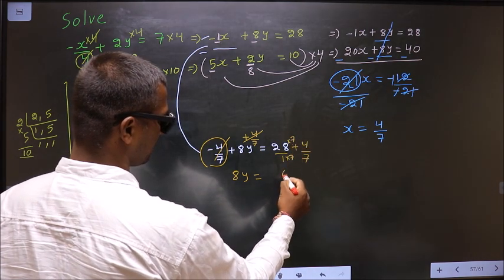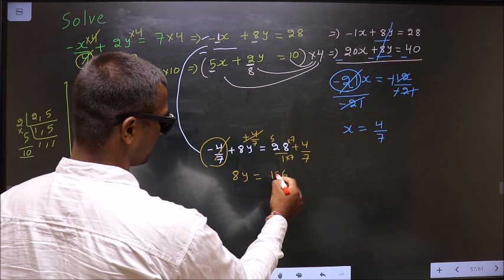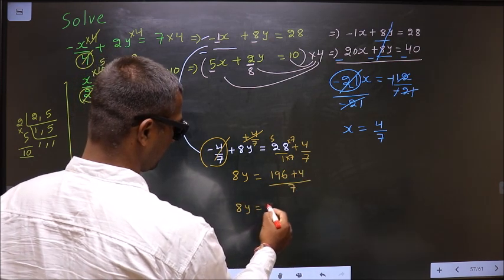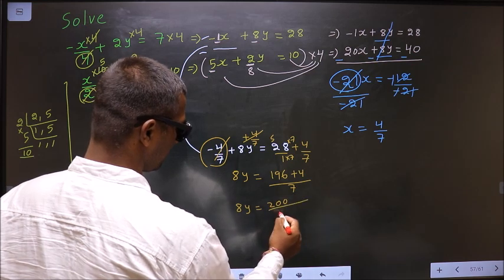Here take the LCM and 28 times 7 is 196 plus 4 by 7. So 8y equal to 200/7.